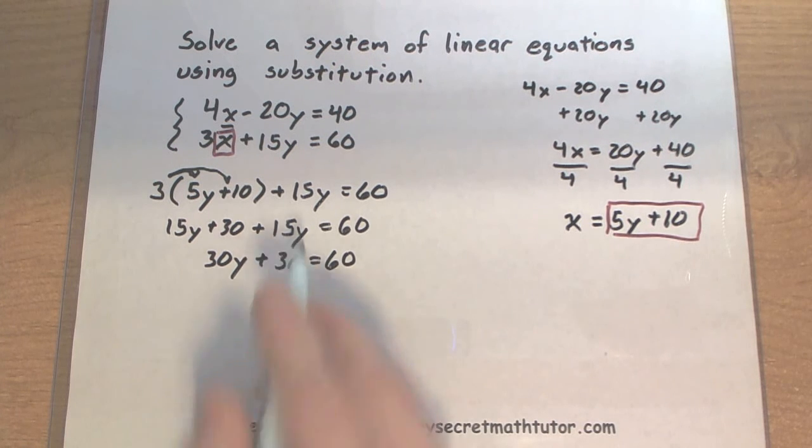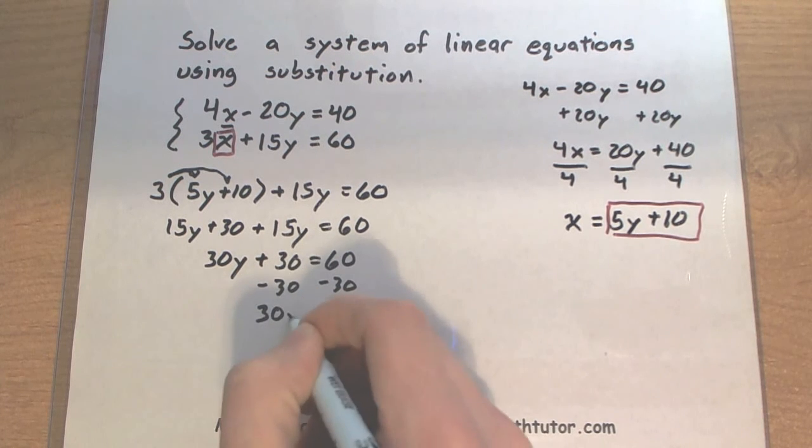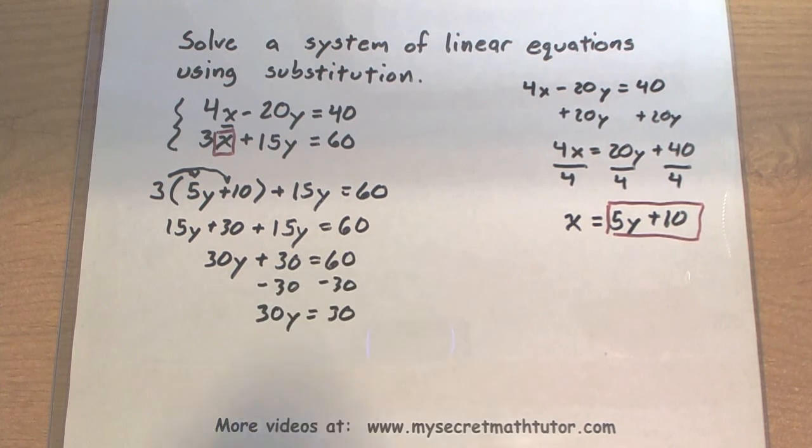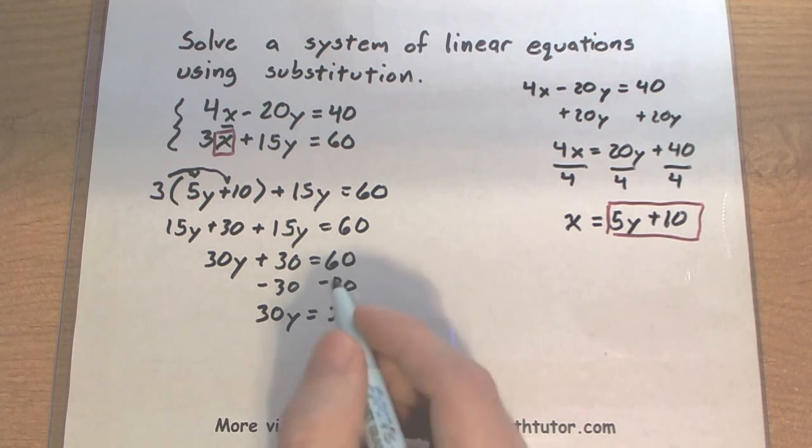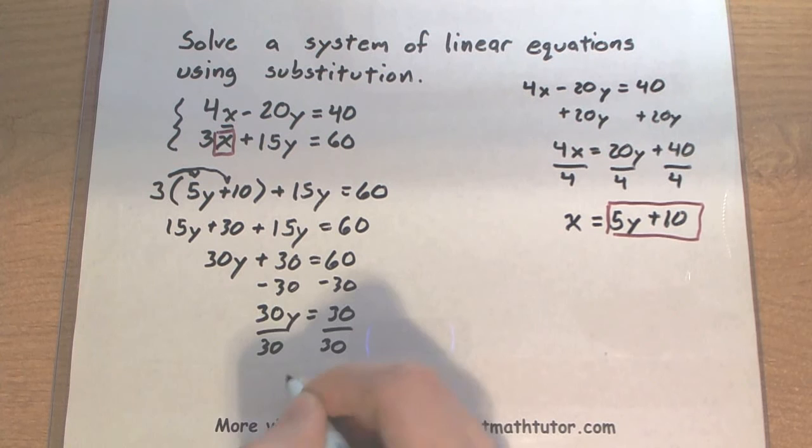Looks like we can move this 30 to the other side, so let's subtract. And finally, divide by 30. This will give us that y is equal to 1.